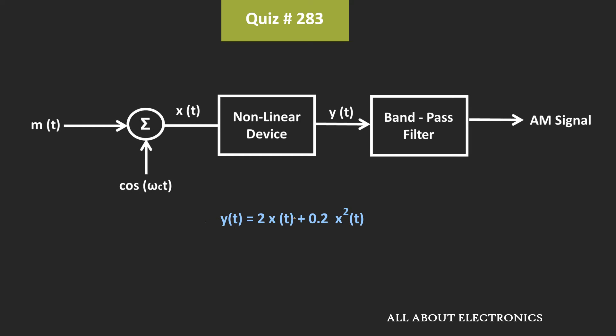So here, for the given square-law device, the input-output characteristic can be given by this expression. That means here, the x(t) is the input to this nonlinear device and the y(t) is the output of this nonlinear device.